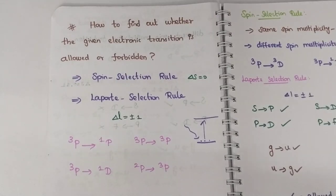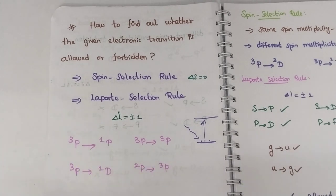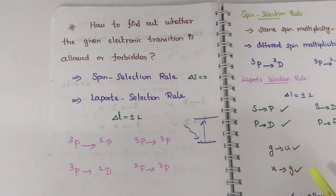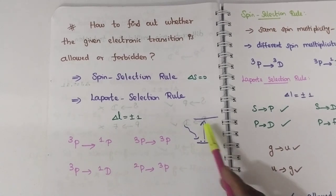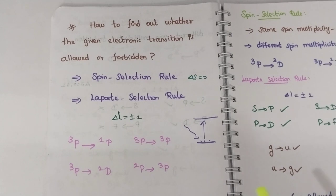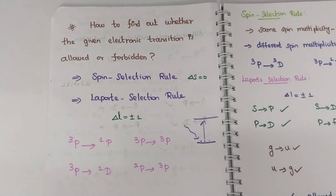Hello, today in this video we are going to see a very interesting topic. They will provide you some electronic transitions, and the question will be like which of the following are allowed and which are forbidden. It is a very easy topic in coordination chemistry. A transition is when you supply some energy and molecules move from ground state to excited state.